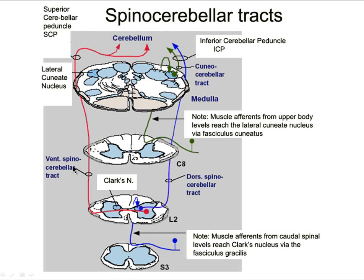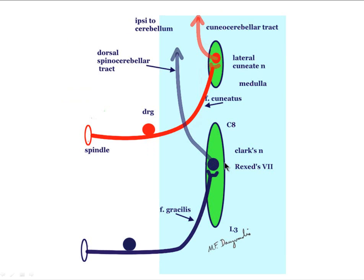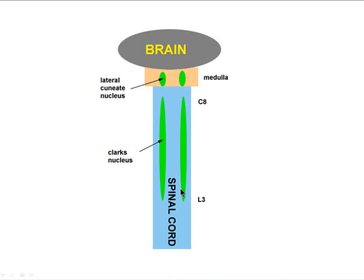Clinically, you likely wouldn't know if your ventral spinal cerebellar tract was cut. Now let's look at more detail for the cuneocerebellar tract. Clark's nucleus only exists from C8 to L3; there's a little gap and then the lateral cuneate nucleus kicks in. Embryologically, maybe once upon a time there was just one long nucleus, so you can think of this as one big long Clark's nucleus.